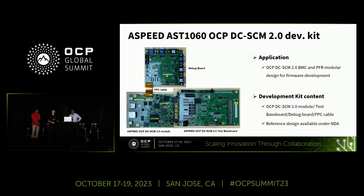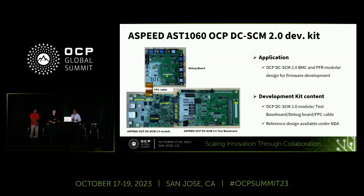Being a BMC vendor, we didn't have access to an external HPM because a lot of things were in design. So we actually designed our own internal HPM — it didn't have CPU infrastructure, but had enough capability to basically test our software and help our partners test their software. We also had a debug board which would help the software team with their debugging. What we show here is our development kit that our partners and customers get access to, and it's completely based on the DCSCM 2.0.